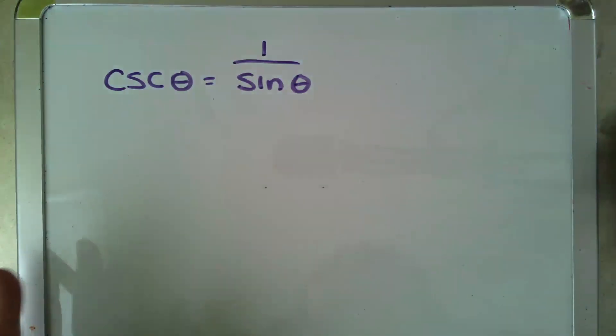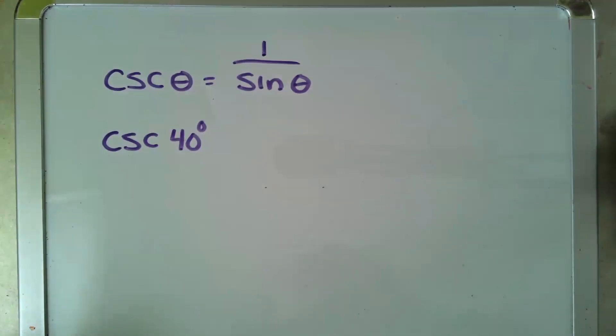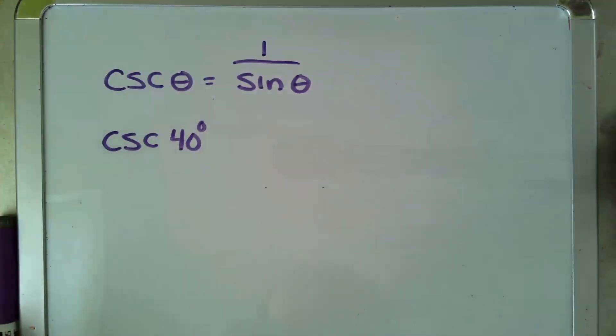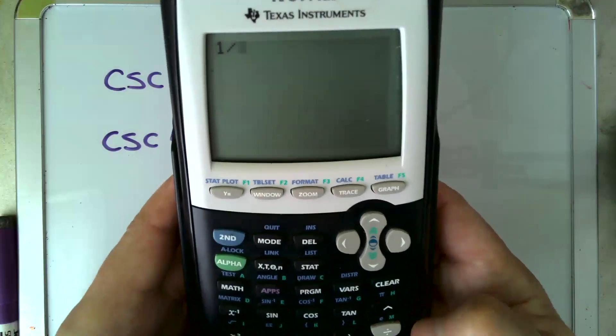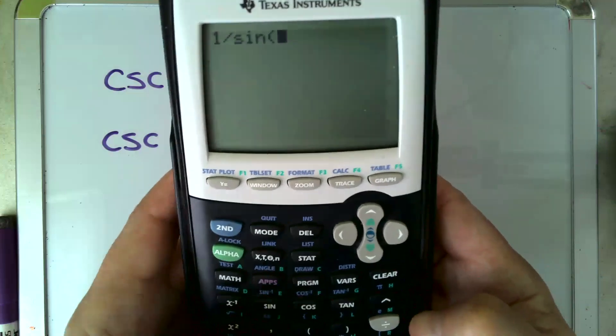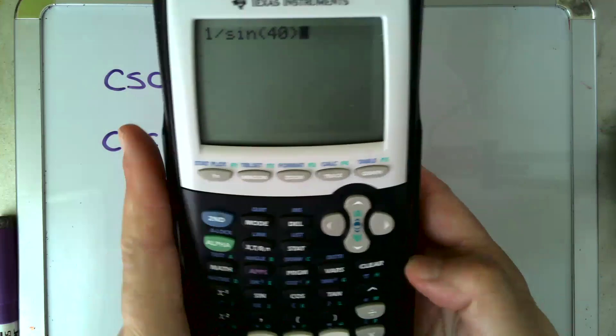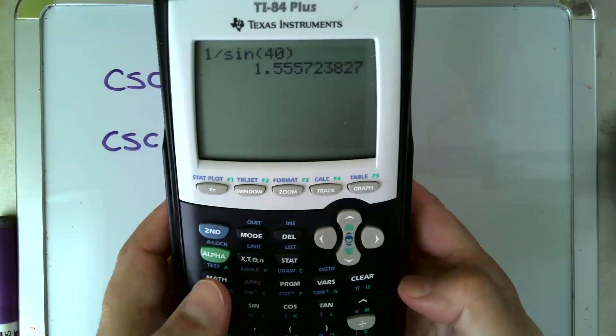So if you're being asked to find the cosecant of 40 degrees, it's as simple as typing into your calculator 1 divided by the sine of 40 degrees, and that's as good as a cosecant button.